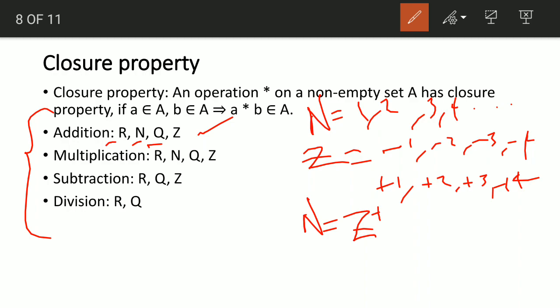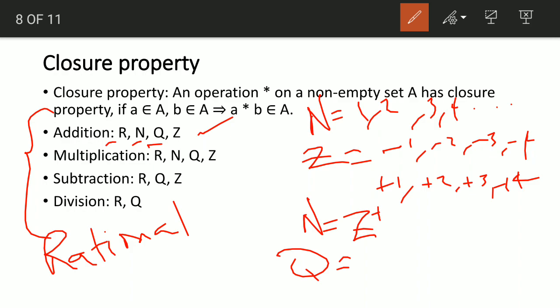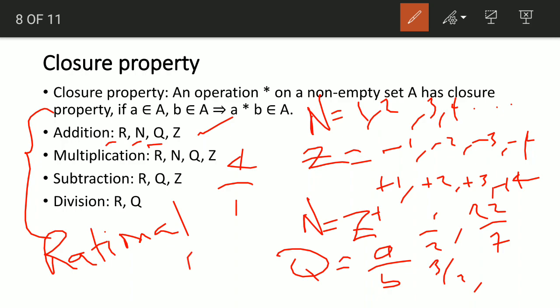Q represents rational numbers. Rational numbers are numbers that can be written in the form A over B. A good example is 1/2, or 22/7, or 3/2. All whole numbers are also rational numbers — for example, 4 = 4/1 and 10 = 10/1. If you must do well in these properties, you must understand the numbers.